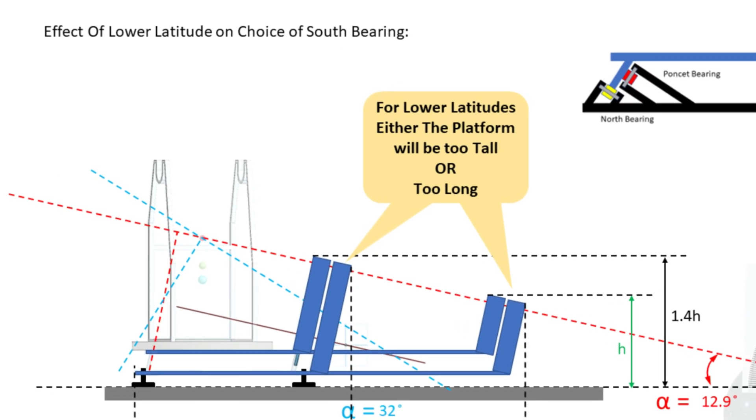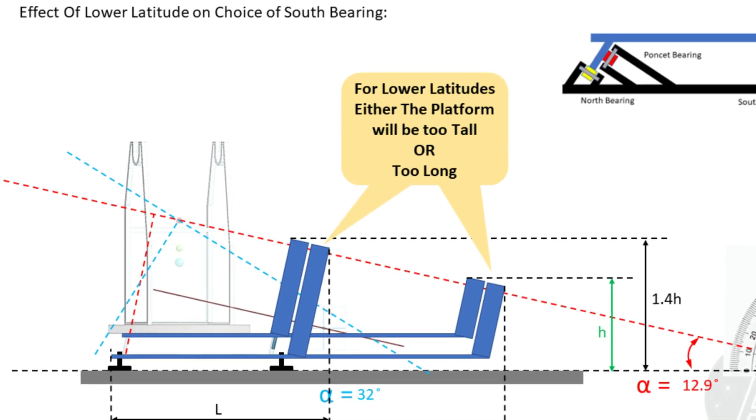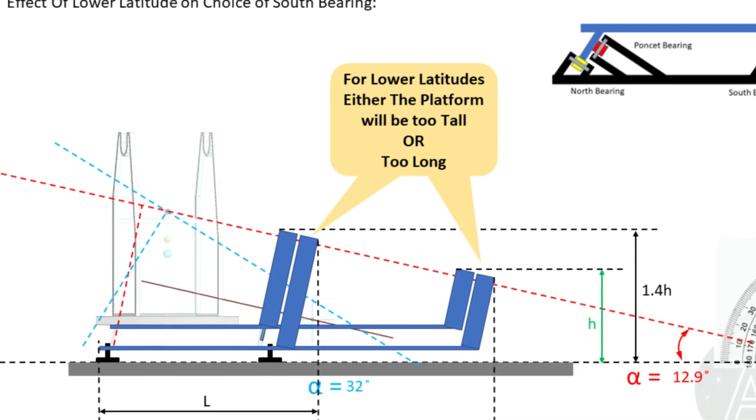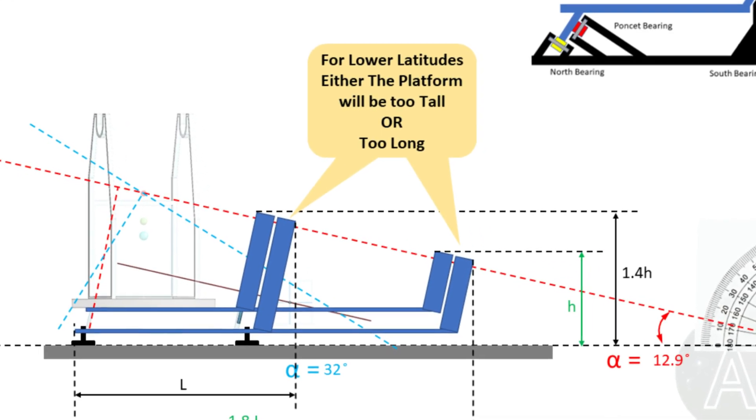Either it will be too long and difficult to carry or it will be very tall from the south side and thus making it very bulky and inconvenient to transport. But just for comparison sake you can see if we want to reduce the length, the height of the south bearing will go by a factor of 1.4.